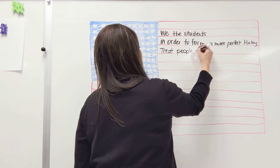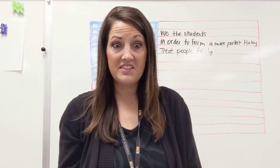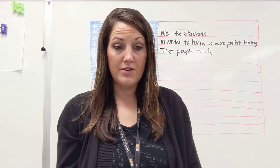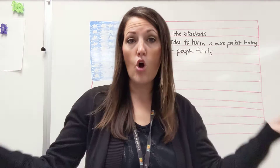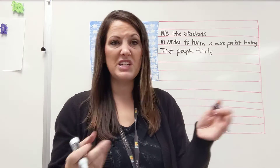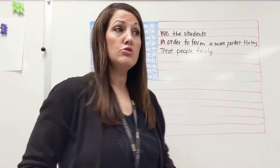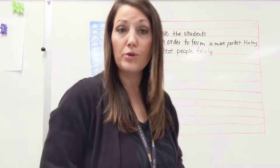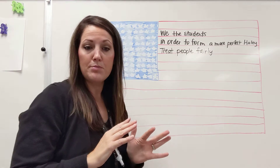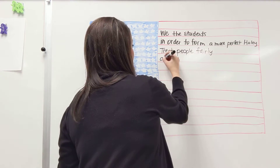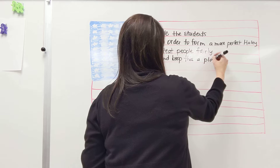And then the next part: ensure domestic tranquility. What is domestic tranquility? Tranquility is kind of like peace. So domestic tranquility is like we want there to be peace among all the people in our building — a peaceful place to be, a peaceful place to go. So we can change that to: keep this a place of peace. You don't want it to be a war zone when you come to school, or on virtual learning that everybody's angry. We want it to be a place of peace. So: keep Haley a place of peace.